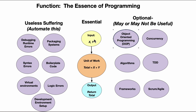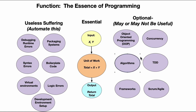You can solve problems with just an input, a unit of work, and an output. Likewise with concurrency — it's easy when you first start programming to get trapped into thinking you should always spin up threads, processes, or do async network I/O. In fact, that can be a real burden for the problems you're trying to solve. Complex algorithms are the same: it may or may not be useful to use the best algorithm when you're just starting out.